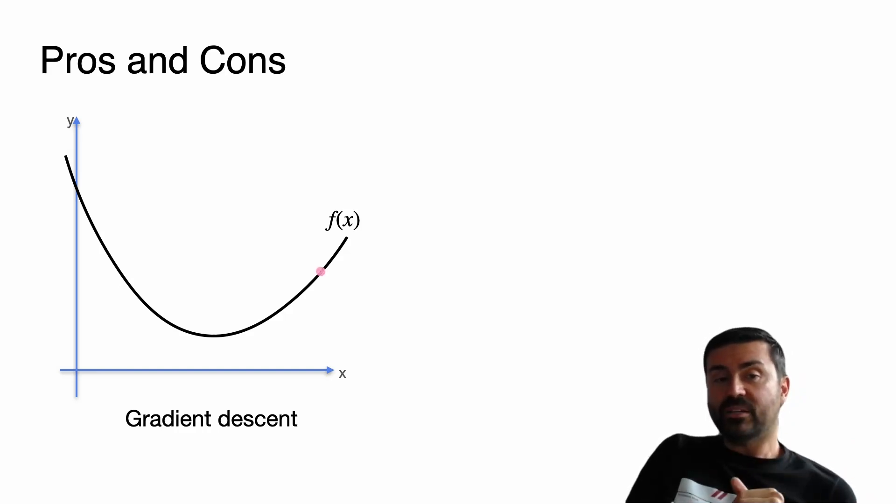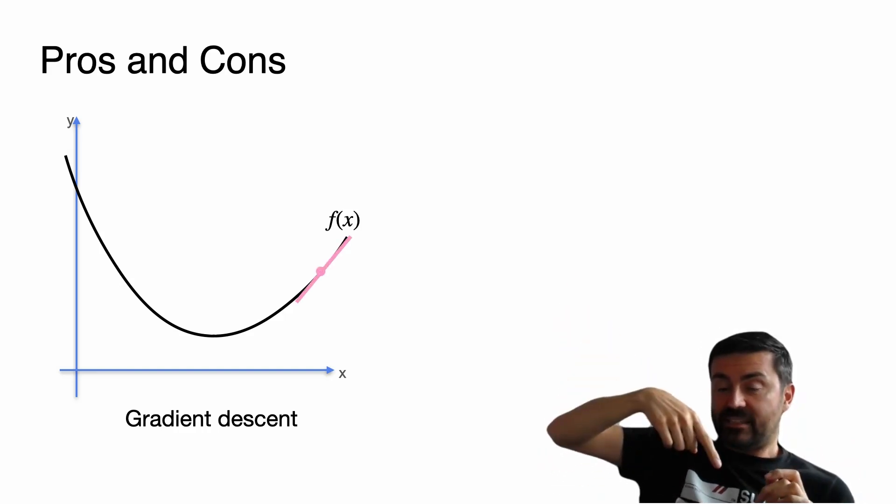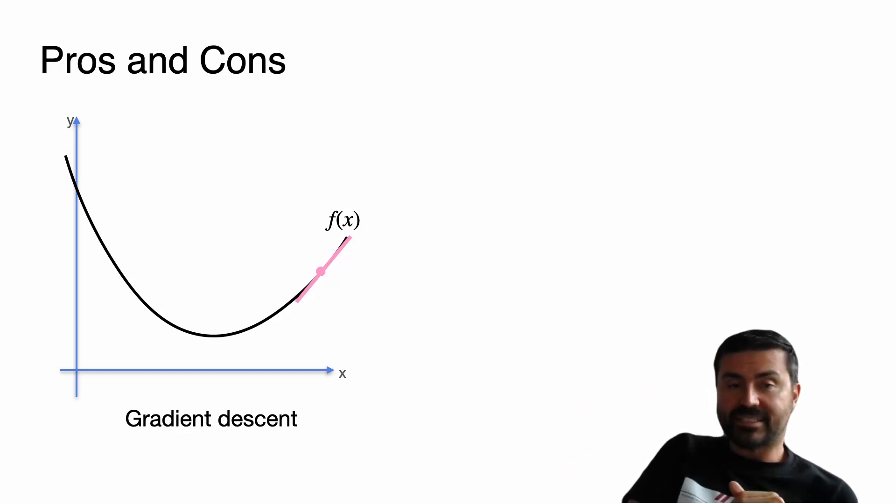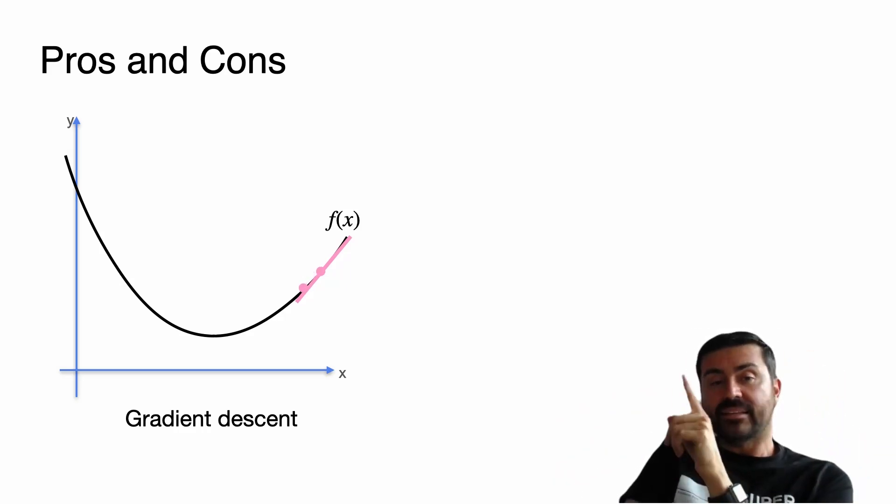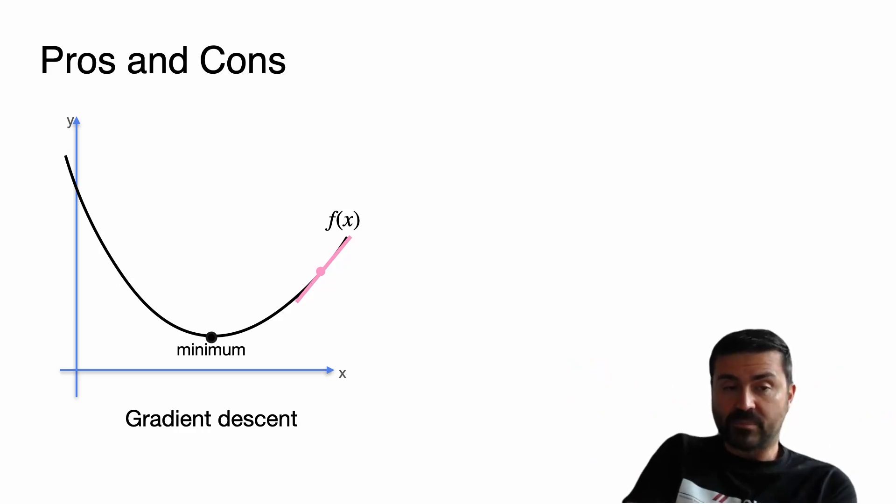How does gradient descent work? Well, you again pick a random point and then you again draw the derivative, except now you don't make it hit the horizontal axis. You instead take one step in the direction that the derivative goes down. And then you continue doing that, taking steps in that direction, always calculating the derivative, and at some point you get really close to the minimum.